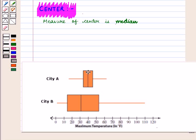The vertical line inside the box is drawn at median. So we see that median for city A is given by 40 and for city B it is equal to 31.